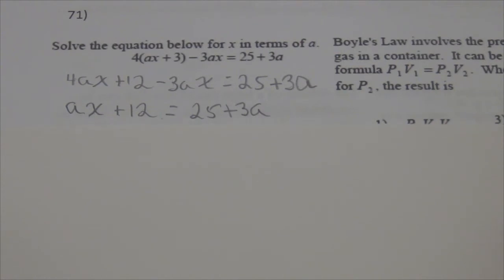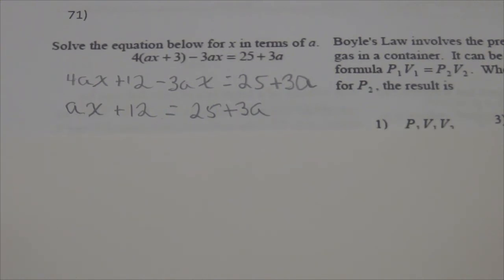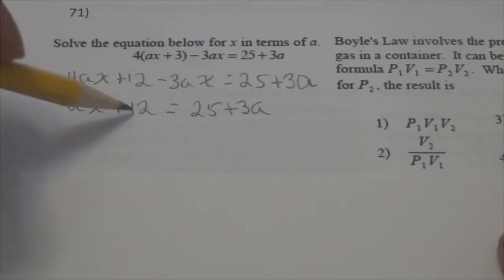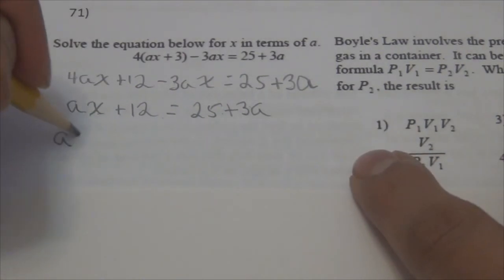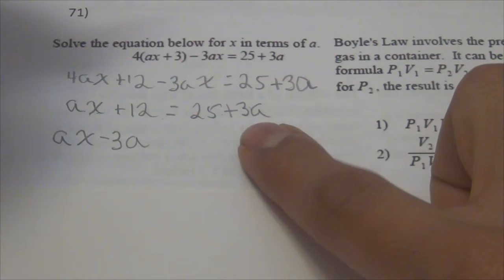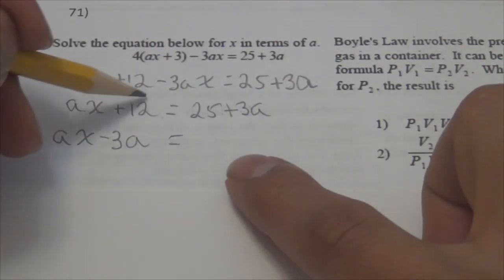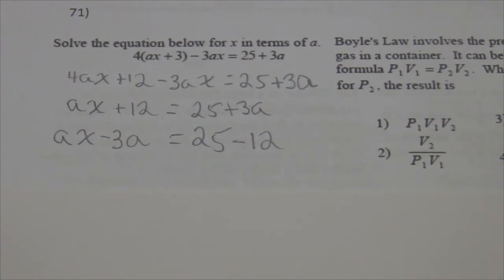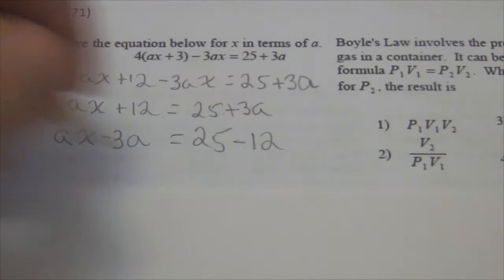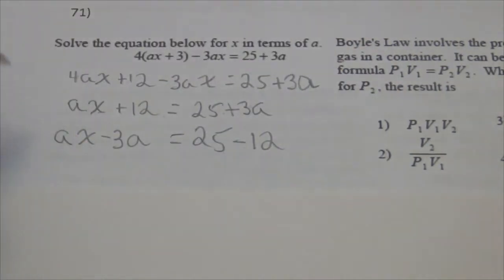Do I have variables on both sides? Yes, but they're not like terms. I'm supposed to solve for X. I'm going to subtract 3A so it disappears from the right, and subtract 12 so it disappears from the left. I did it in one step — hopefully you can too.